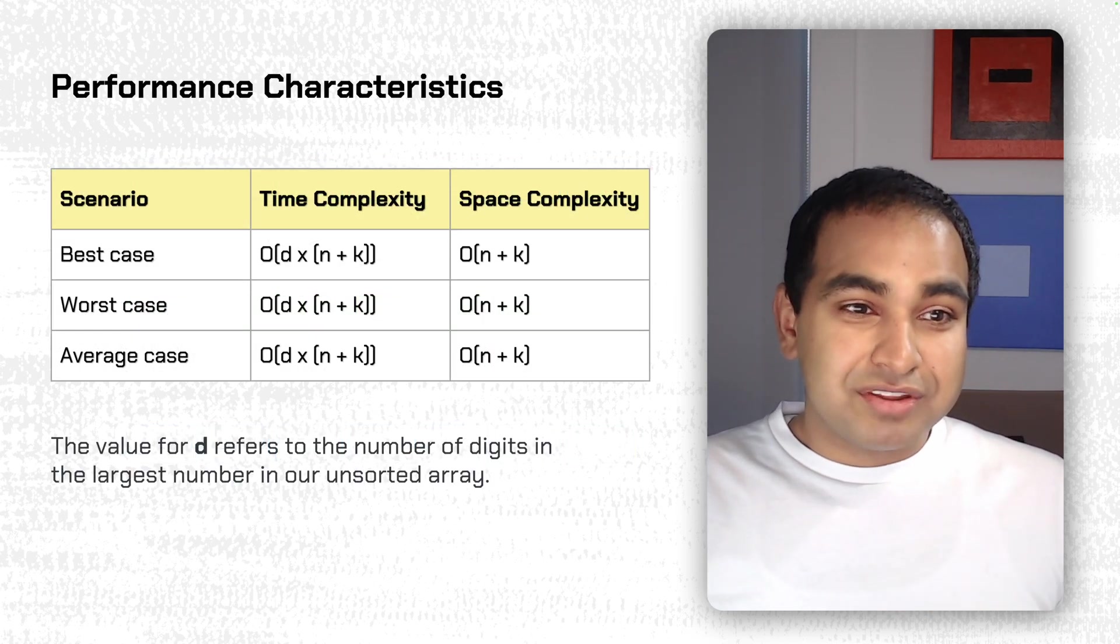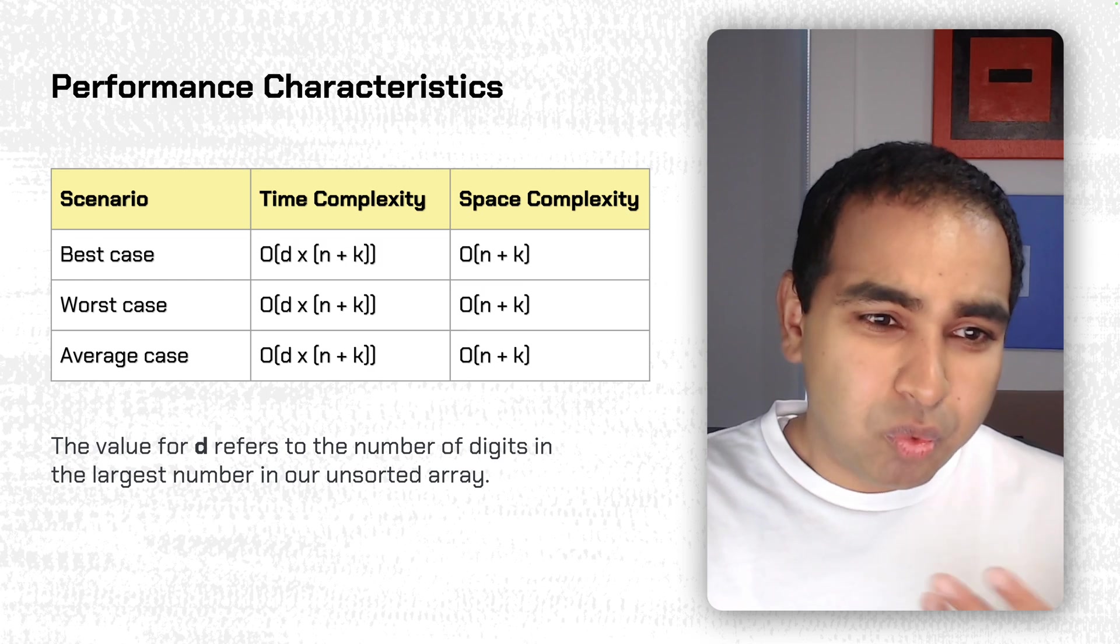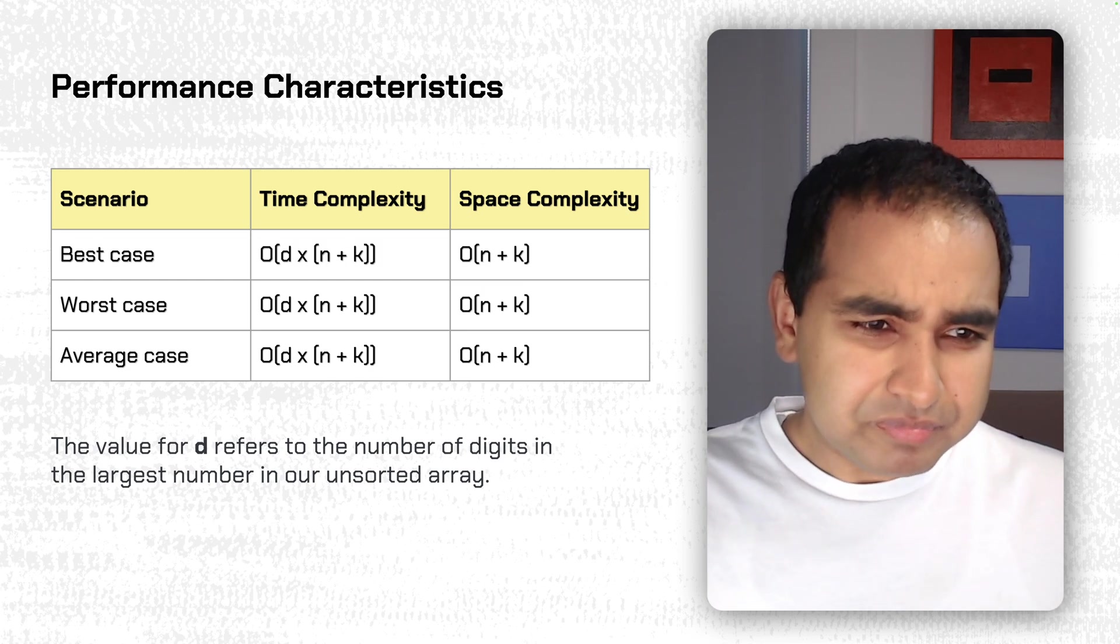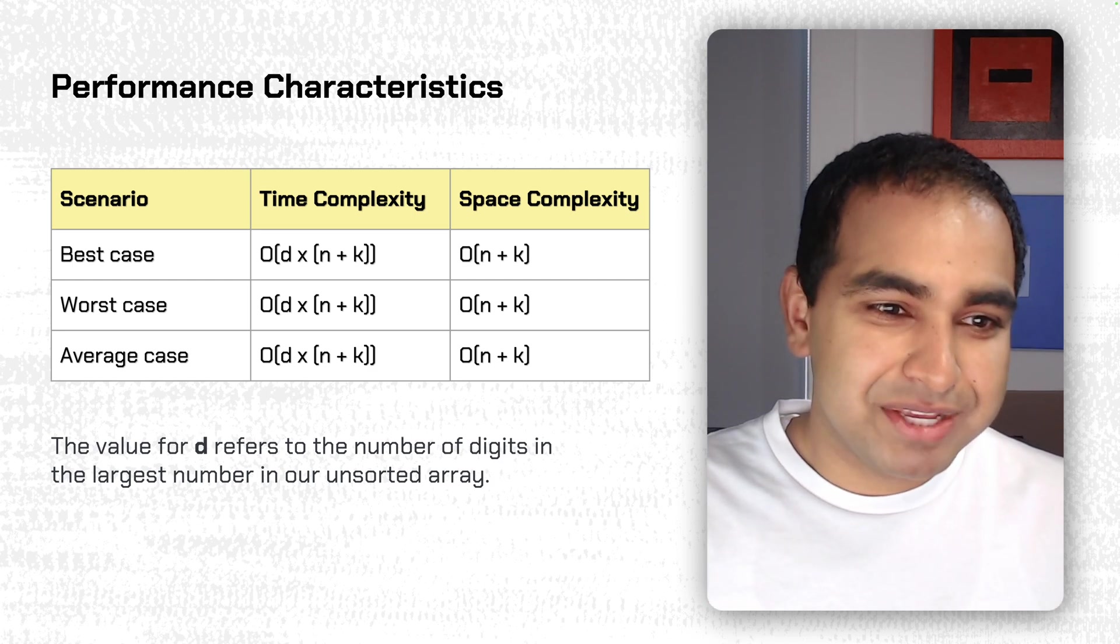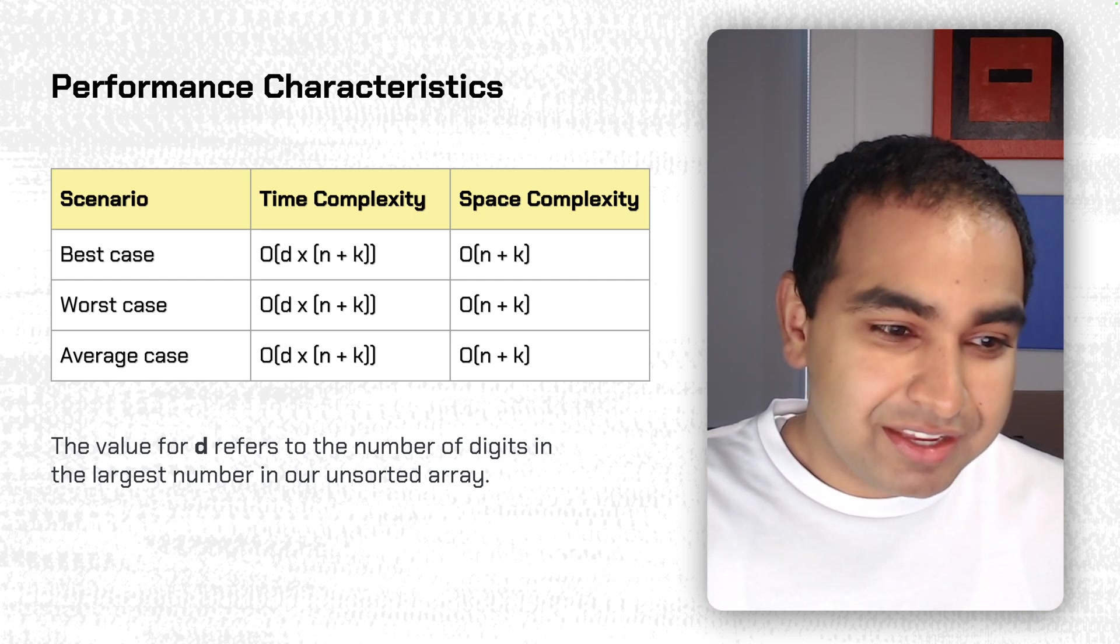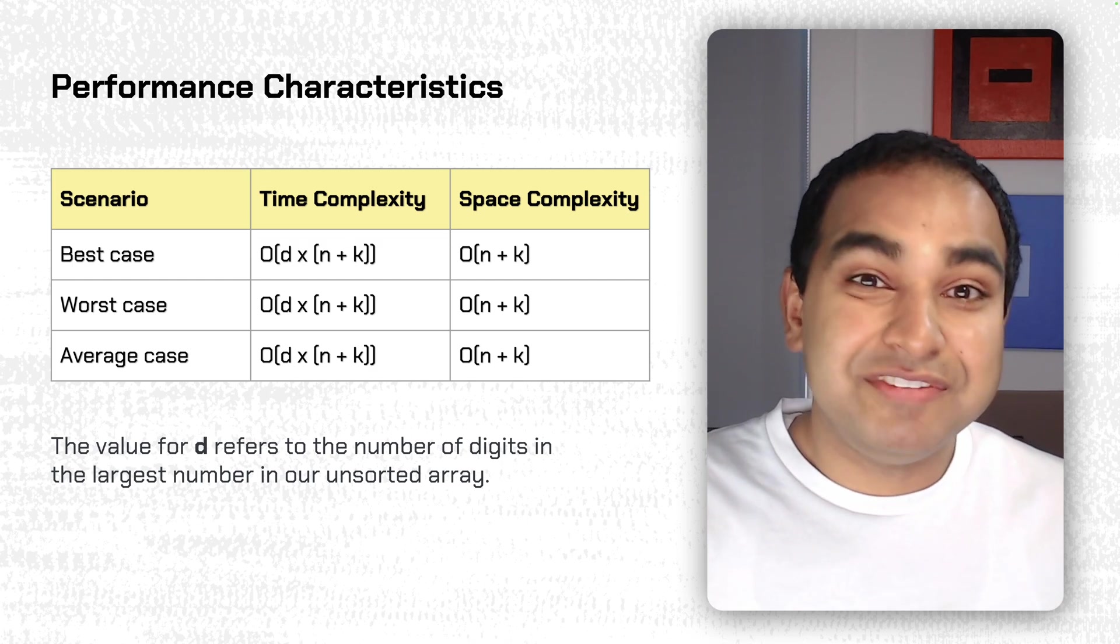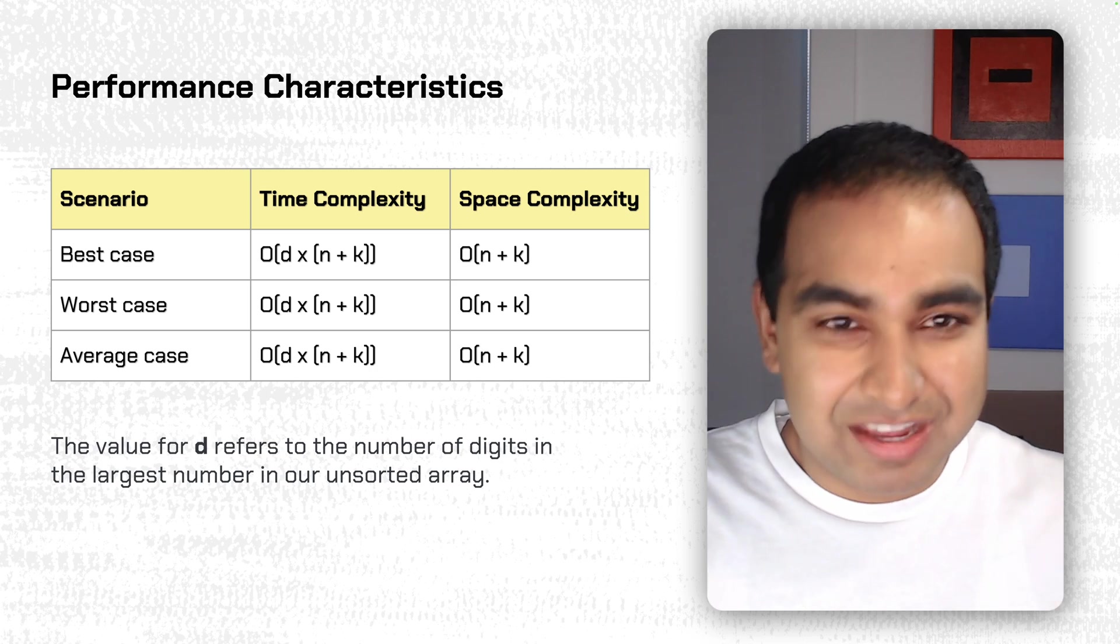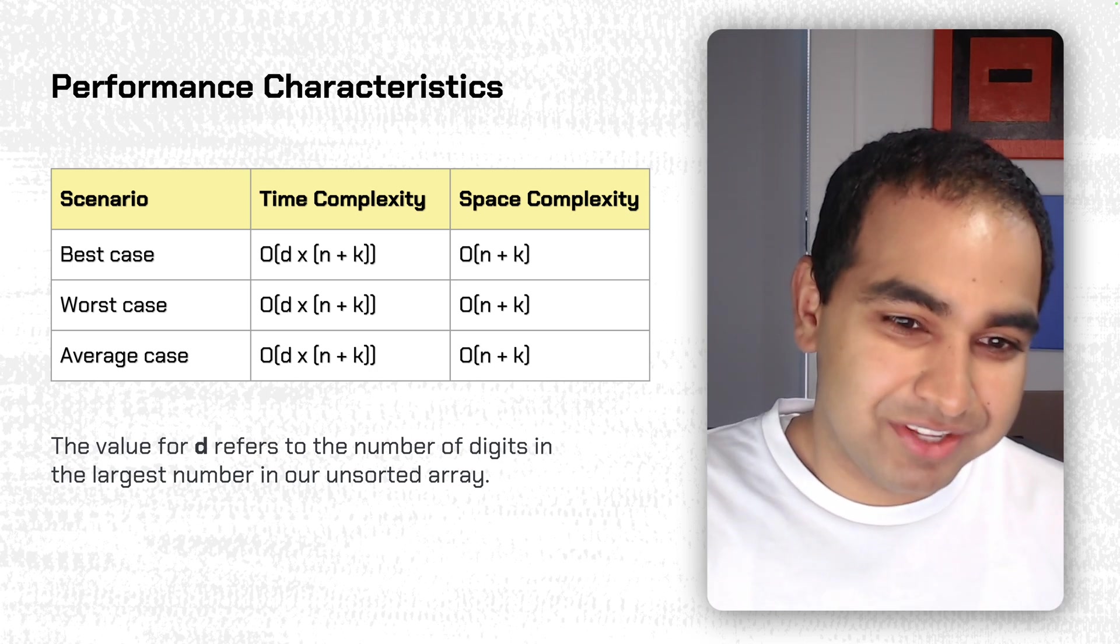And so this makes our performance characteristics for Radix Sort quite appealing. The best case and worst case and average case time complexity is linear. It's big O of D times N plus K, and that D is probably a new value you're seeing, but D refers to the number of digits in the largest number in our unsorted array, which would be 4. For the example we walked through, 2310 had 4 digits.